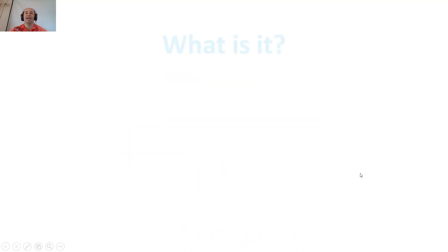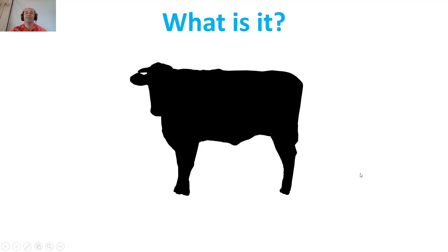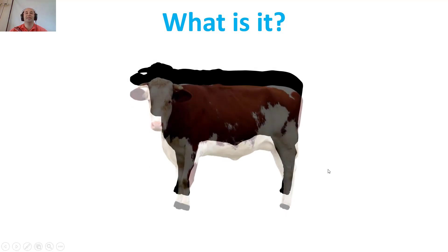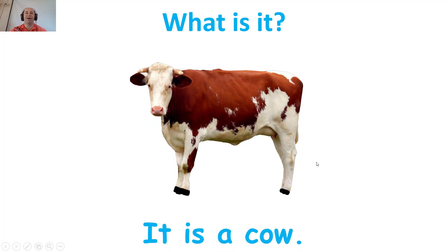After the crab we have this animal. What about this? What is it? It is a cow. It is a cow. A cow.